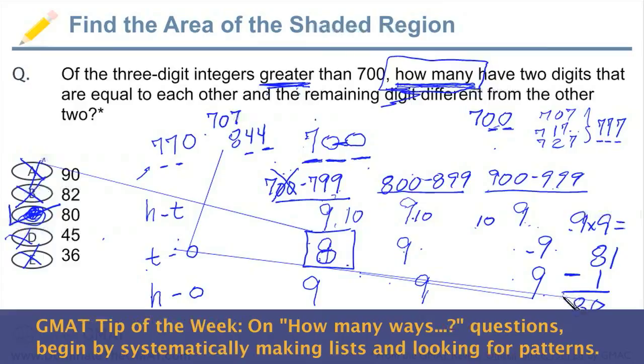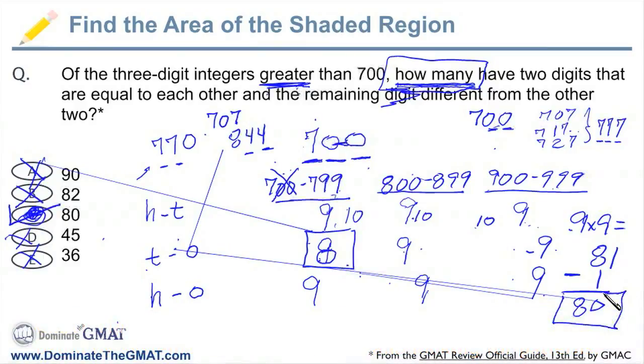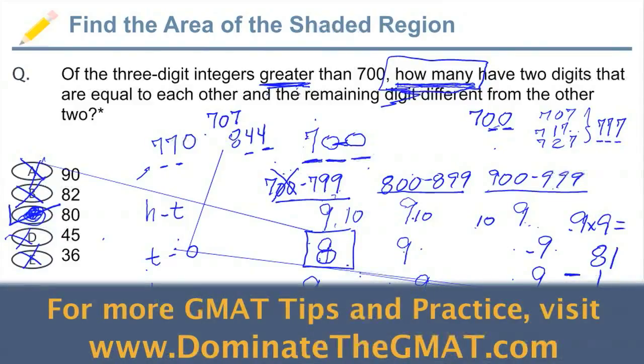And then I can do some quick math and say 9 times 9 is 81, minus 1 is 80. So I hope this tip is helpful. You will see some how many questions on the GMAT. Now you're equipped to answer them. You'll have plenty of time to make these types of lists in under two minutes to come up with a right answer and go out and dominate the GMAT.